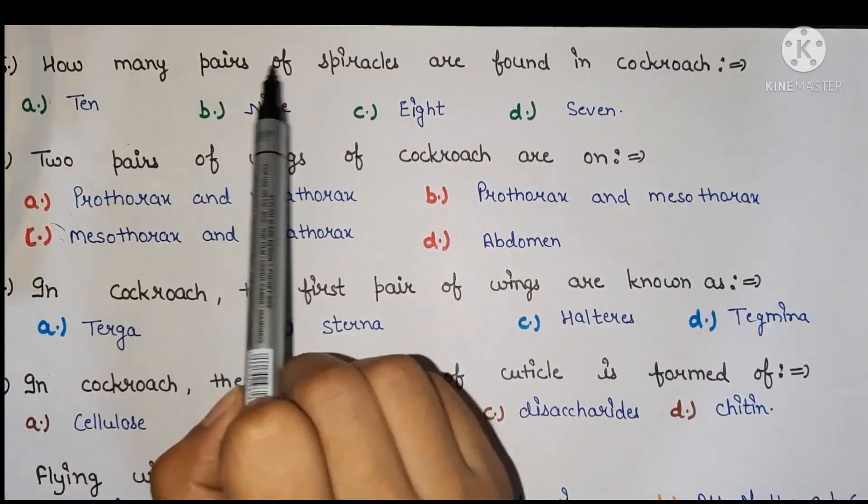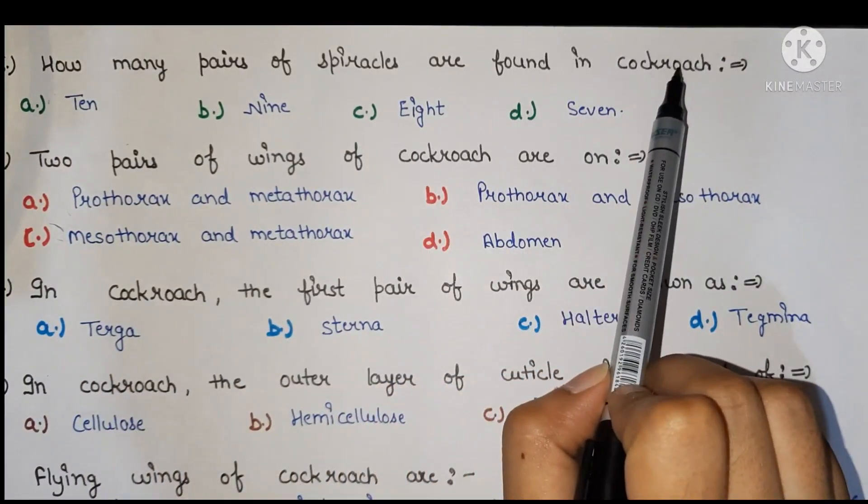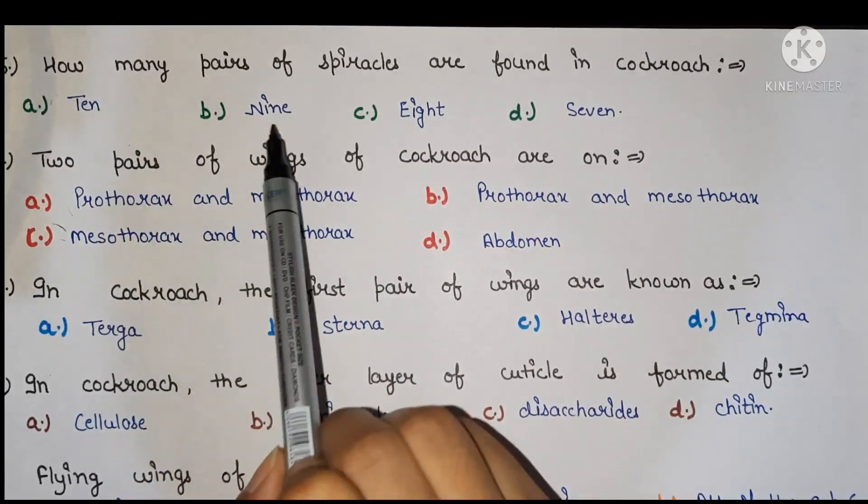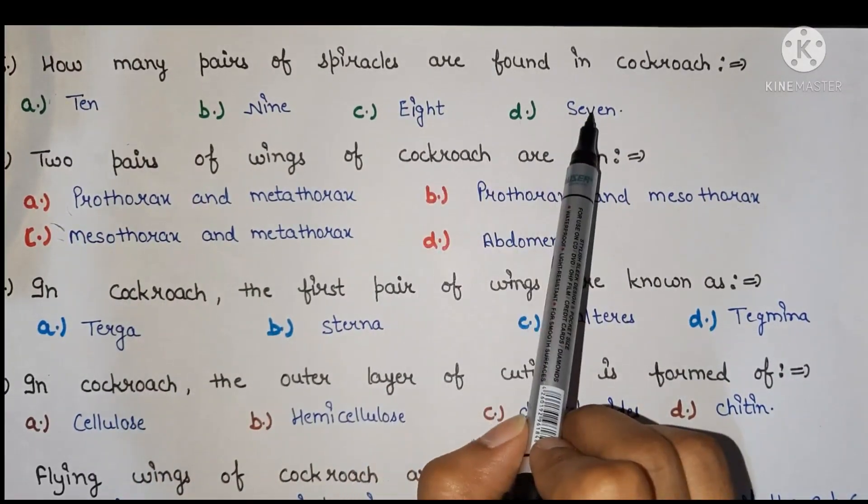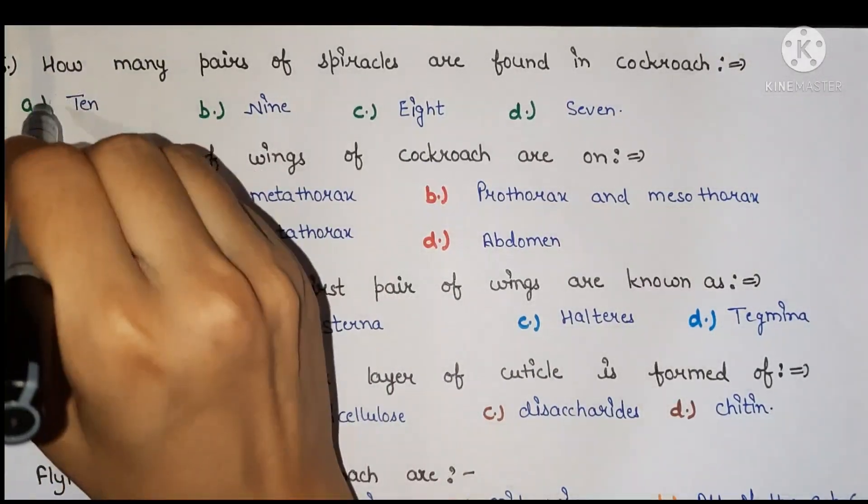Next, how many pairs of spiracles are found in cockroach? 10, 9, 8, 7. Right answer is 10.